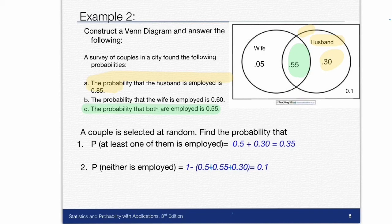Then I do the same thing for the wife. It says the probability that the wife is employed is 0.6. So I know that these two probabilities have to add up to be 0.6. So I already know 0.55. I subtract it and I'm left with 0.05. And that's where I get 0.05 for just the wife that is employed. 0.55 is still that both of them are employed.